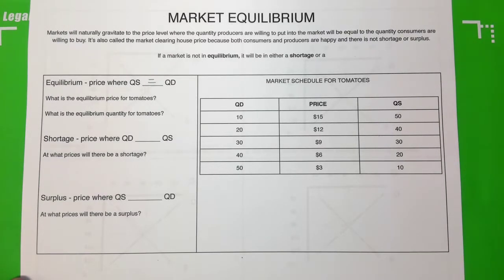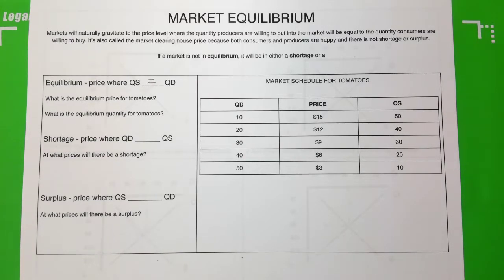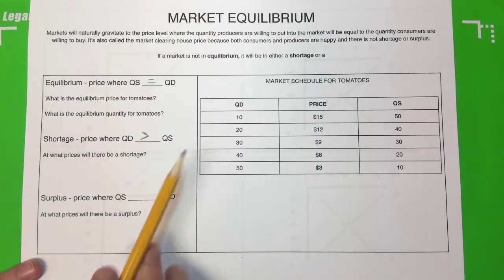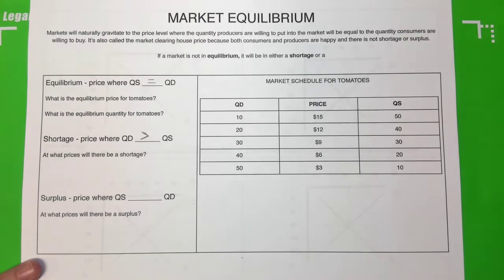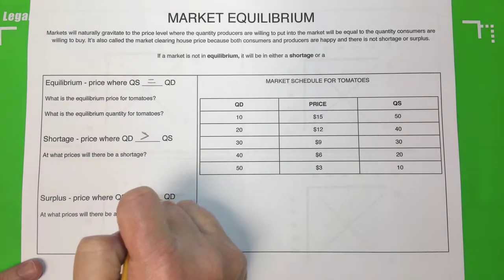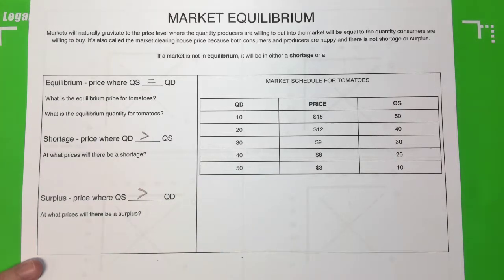Equilibrium is the price point where the quantity supplied is equal to the quantity demanded — that's the price point where everything that producers put into the market consumers will be willing and able to buy. If a market is not in equilibrium, it's either going to be in a shortage or a surplus. A shortage is a price point where the quantity consumers want to buy exceeds the quantity producers put into the market. A surplus is where producers supply more quantity than consumers want to purchase.